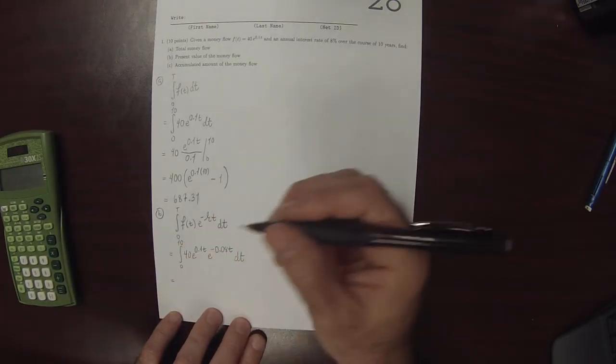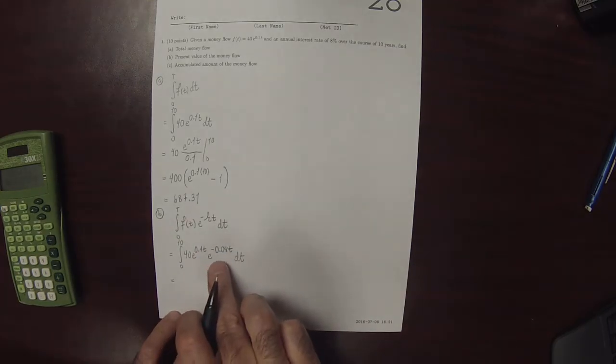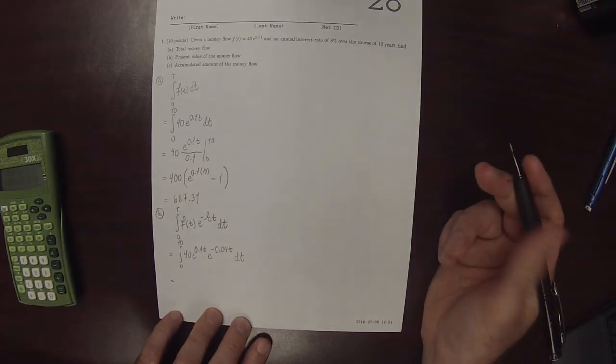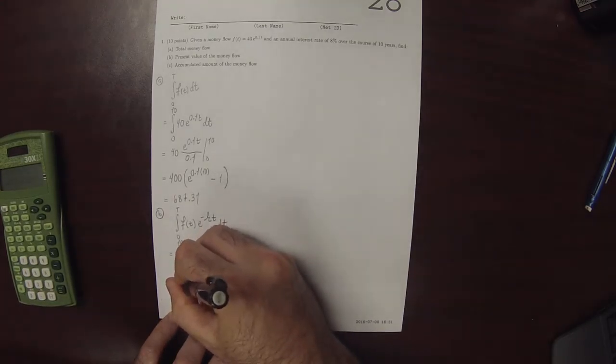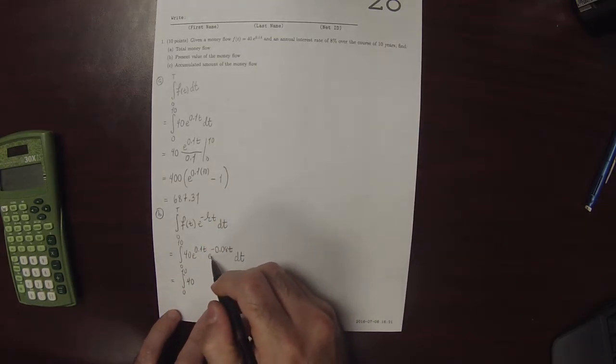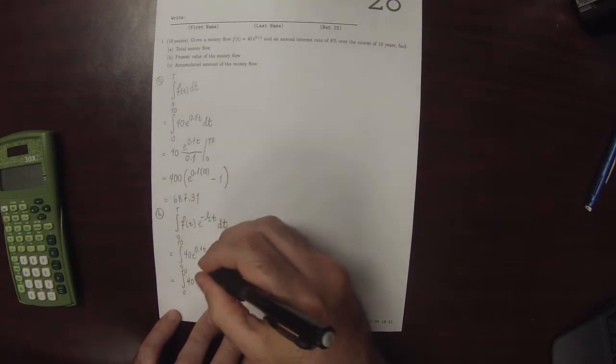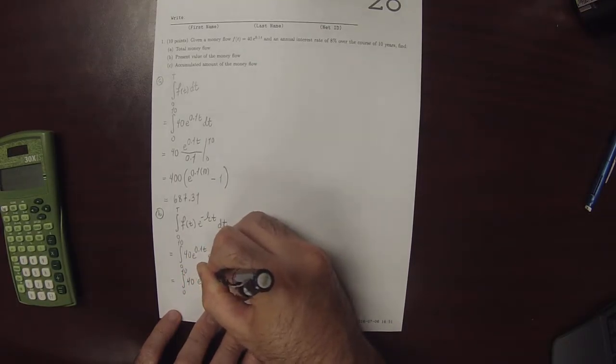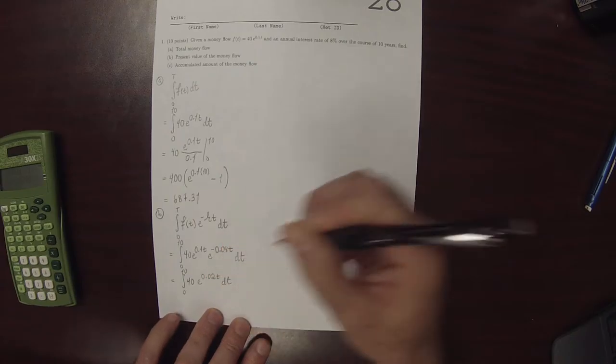So that is, unlike the previous exercise written homework 27, this product can actually be algebraically simplified, so we will not need integration by parts. So then this is 0 to 10, 40, and then because the bases are the same we add the exponents. And when you do that, you get exponential of 0.02 T, dt.